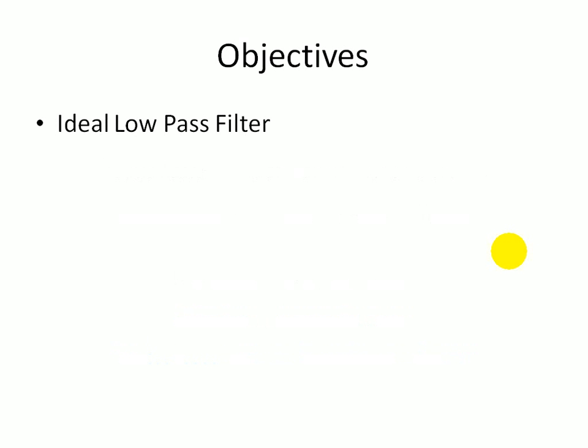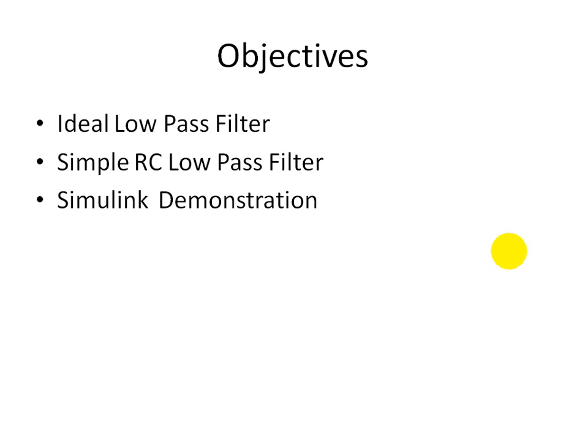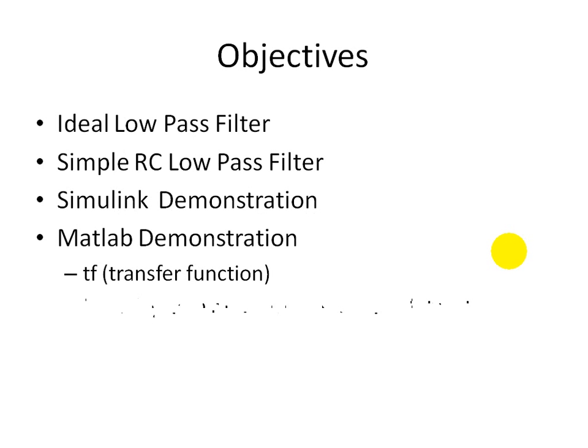The objectives of this presentation: I'll first explain what an ideal low-pass filter is, then a simple RC low-pass filter. From there, I'll do the demo first using Simulink, then MATLAB to demonstrate the transfer function command TF, as well as the Bode command to plot the system magnitude and phase plots as a function of either the frequency or the radian frequency.